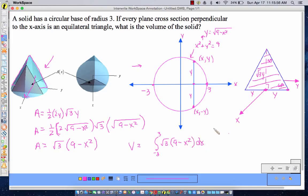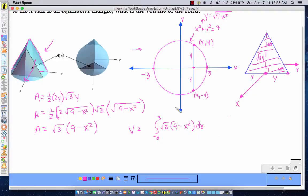OK. And then we're going to integrate like it's 1999. So this is going to equal root 3 times 9x minus x cubed over 3 evaluated from negative 3 to 3.